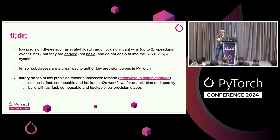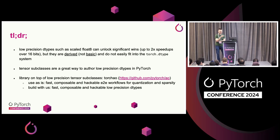There are three takeaways I hope everybody to take for the next 10 minutes. One, there's been a lot of exciting research in low-precision dtypes. However, a lot of these dtypes are hard to express in existing Torch dtype systems, because they tend to be derived instead of basic. Second, tensor subclasses are a great extension point to build logic using dtypes in PyTorch. And third, we're going to cover a fairly new library called Torch.io, where we build native PyTorch quantization and sparsity workflows.